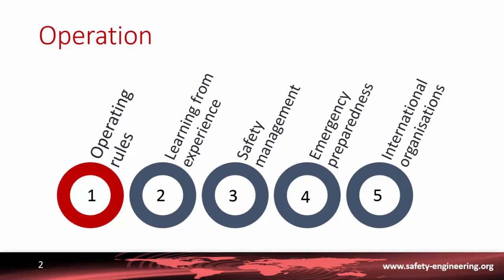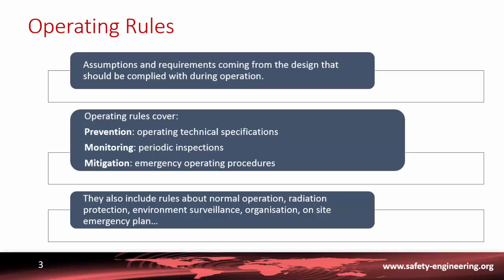The first subpart covers the operating rules, which assemble the assumptions and requirements coming from the design that should be complied with during normal operation. The operating rules cover the defense-in-depth principle: prevention — this document is called the Operating Technical Specification — monitoring through periodic inspection and testing, and mitigation through emergency operating procedures. They also include rules on radiation protection, environment surveillance, operator organization, and on-site and off-site emergency plans.